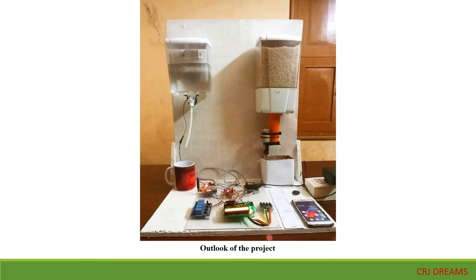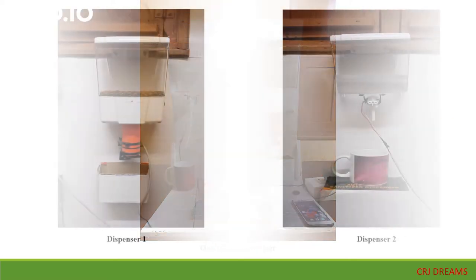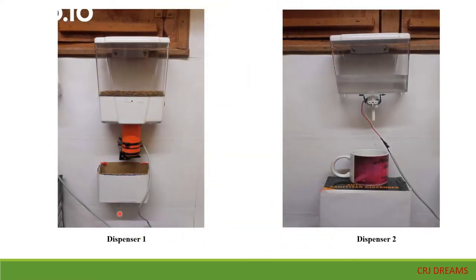After the setup, the project looks like this. One dispenser is used for dispensing food grains like wheat, rice, and ragi, while the other dispenser is used for dispensing liquid commodities like oil or other liquid items.